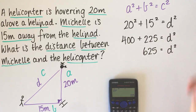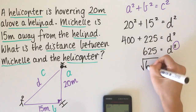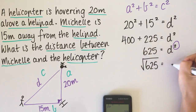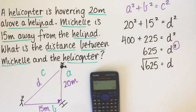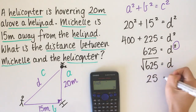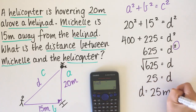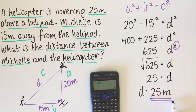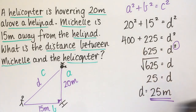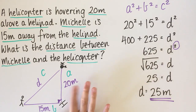We still have D squared, so we take the square root of 625, which gives D = 25. So D is 25 metres. Double checking: the short sides are 20 and 15, so the long side needs to be longer than either of them, and 25 is — so that makes sense.